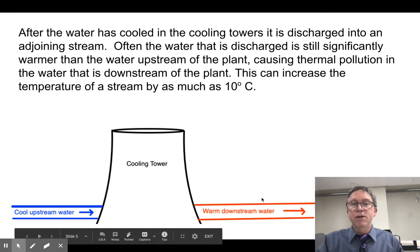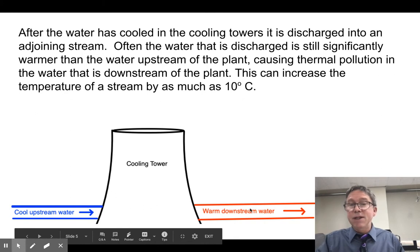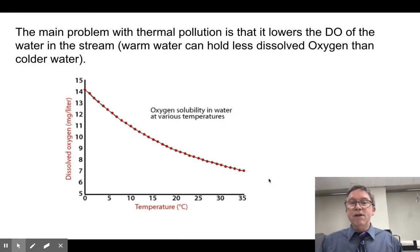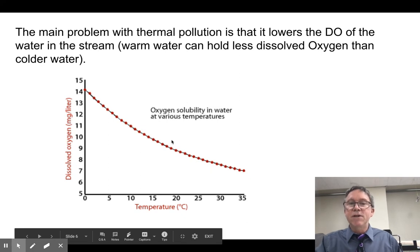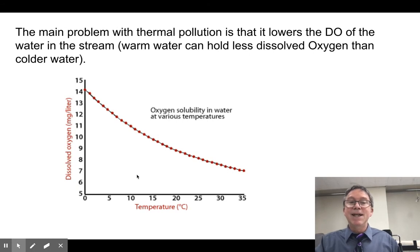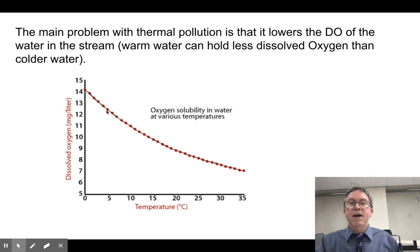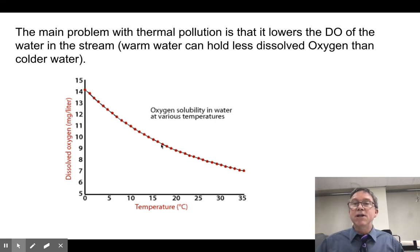This is what we mean by thermal pollution: we took water at one temperature and turned it into water at a different temperature. It's chemically the same water — the only chemical difference is in dissolved oxygen. Because dissolved oxygen, like all gases, loses solubility in liquids with temperature. As the temperature of water increases, the ability of oxygen to dissolve into it decreases. So if water came in at around 5°C, it might have about 12.5 milligrams per liter of dissolved oxygen. But if I increase it 10 degrees when it comes out, now it's down around 9 to 9.5 mg/L — significantly reduced available oxygen.